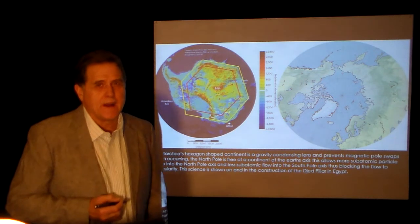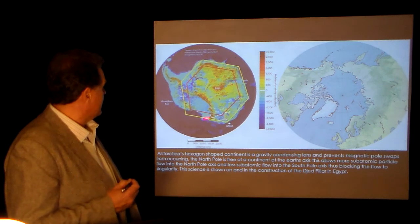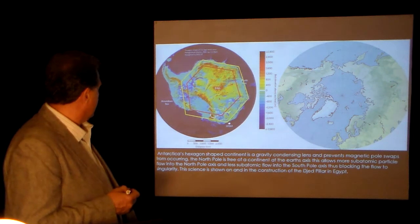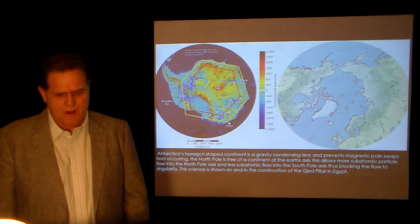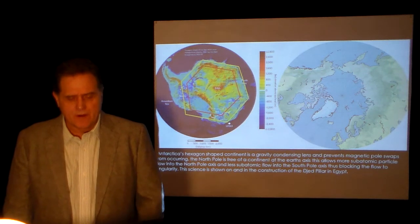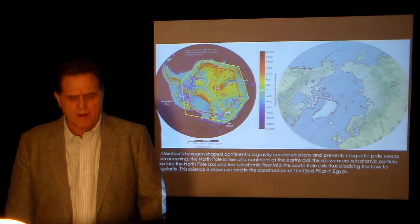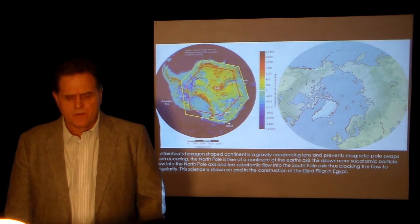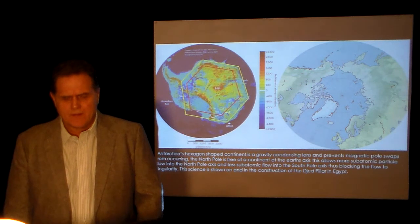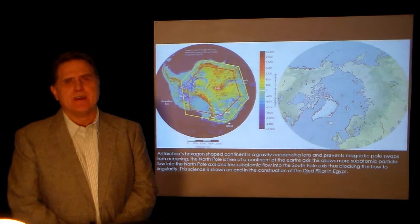Unbeknownst to the world, the iceless continent of Antarctica is, in fact, a hexagon — just like Jupiter and Saturn's south pole hexagon. This is a lens. Antarctica's hexagon-shaped continent is a gravity-condensing lens and prevents magnetic pole swaps from occurring. The north pole is free of a continent at the earth's axis — this allows more subatomic particles to flow into the north pole axis, and less into the south pole axis, thus blocking the flow to singularity. This science is known and is shown in the construction of the Djed Pillar. The Djed Pillar is a symbol — a logo — of how the planet's plates work and the energy flows work.